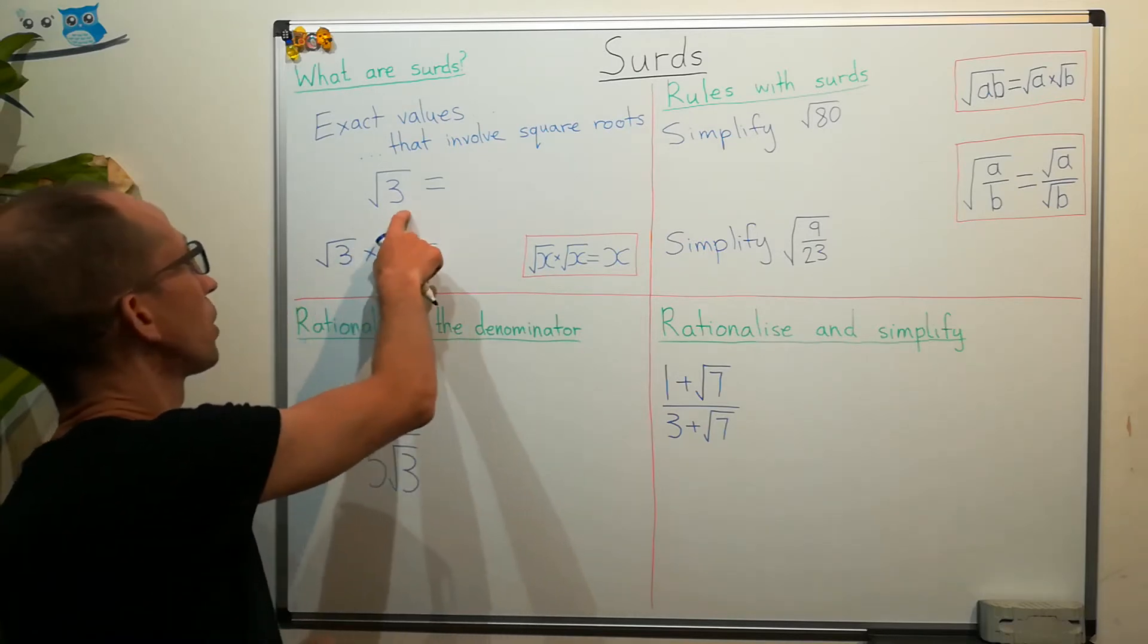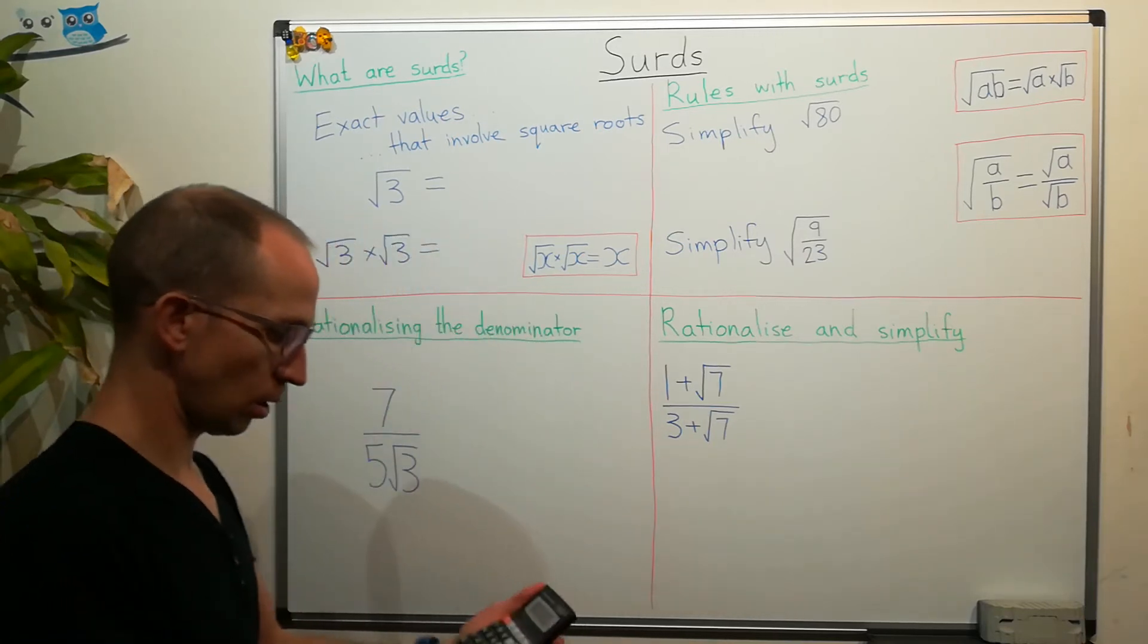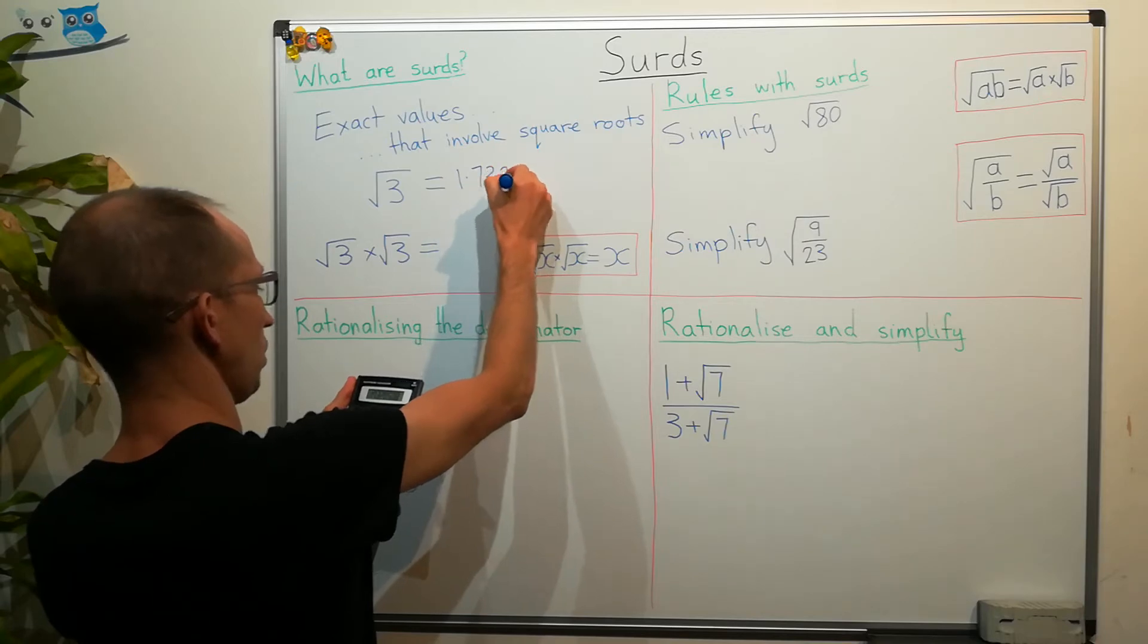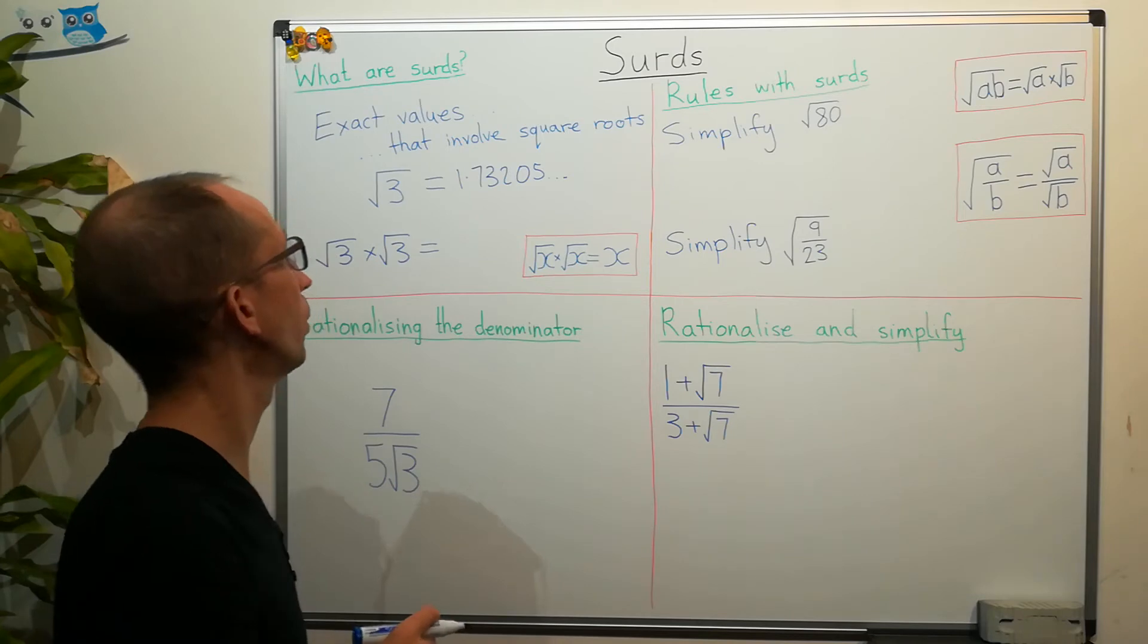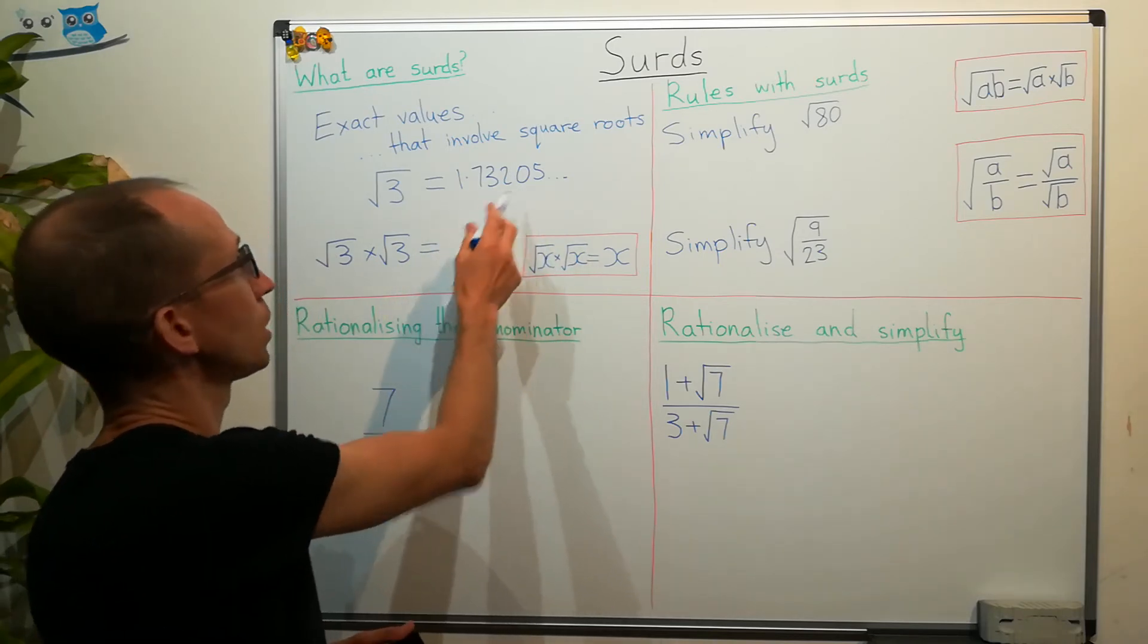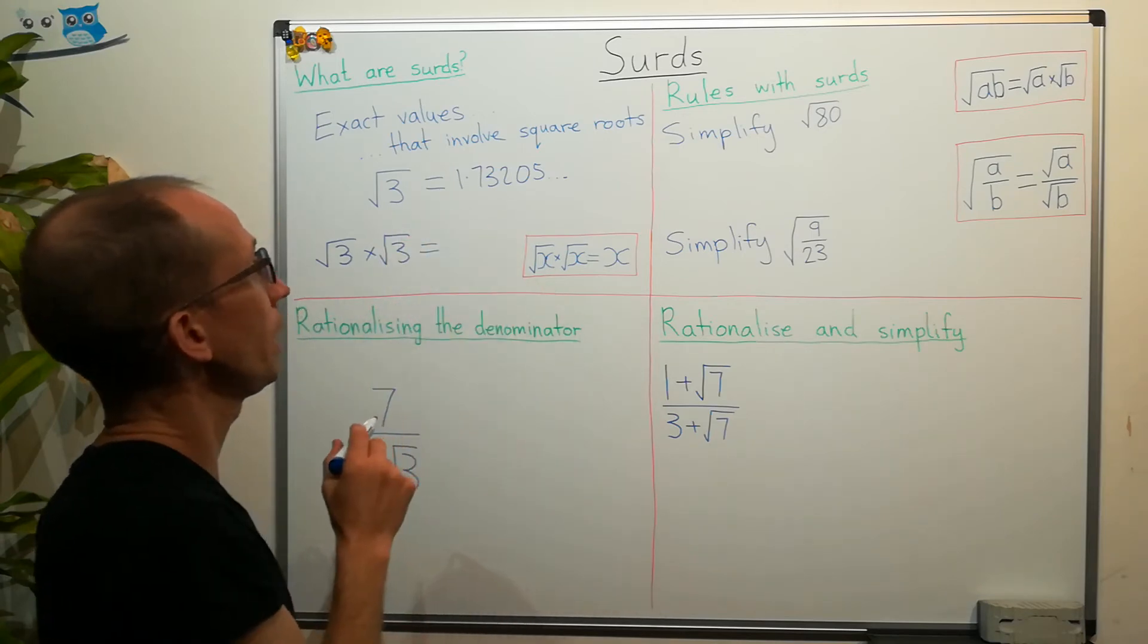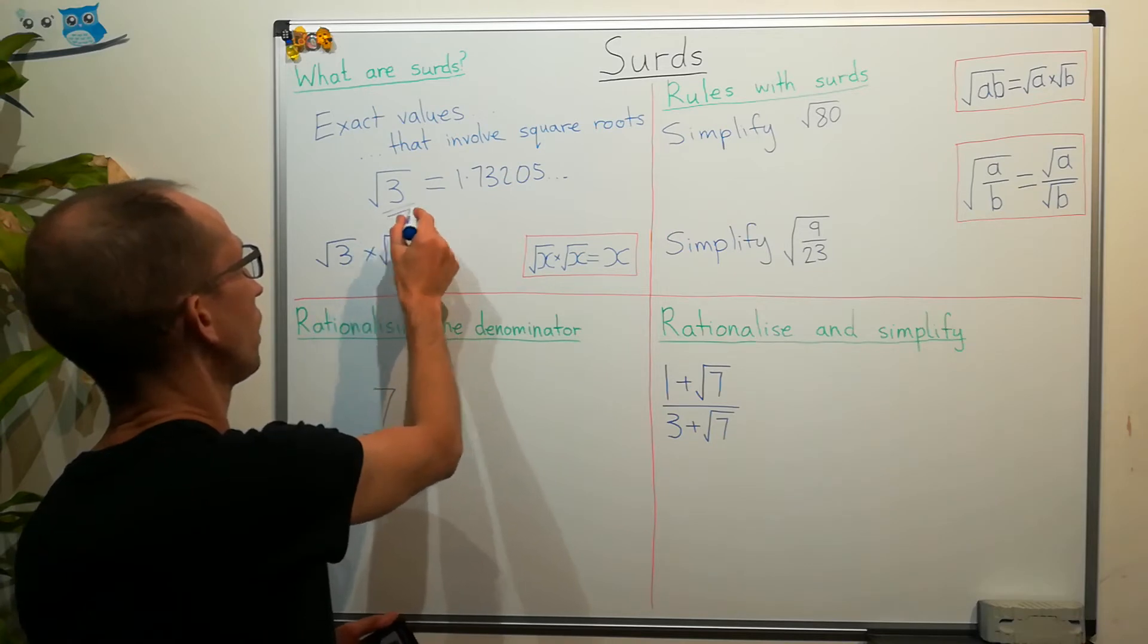So if we start with this number here, the square root of 3. Well if I take my calculator and type in square root of 3, I get an answer of 1.73205 and the decimal places go on. Now, if I'm writing it to decimal places, then I'm losing some of the accuracy. The only way I can write the answer to square root of 3 without losing any accuracy if I'm having to do any rounding is by leaving it in this form.